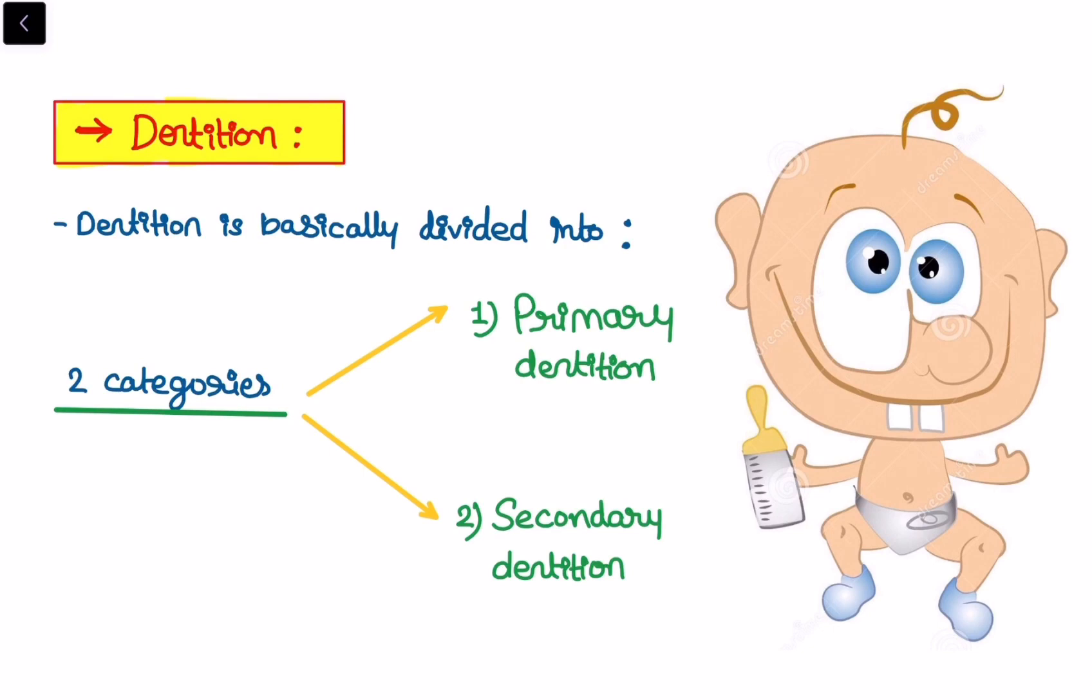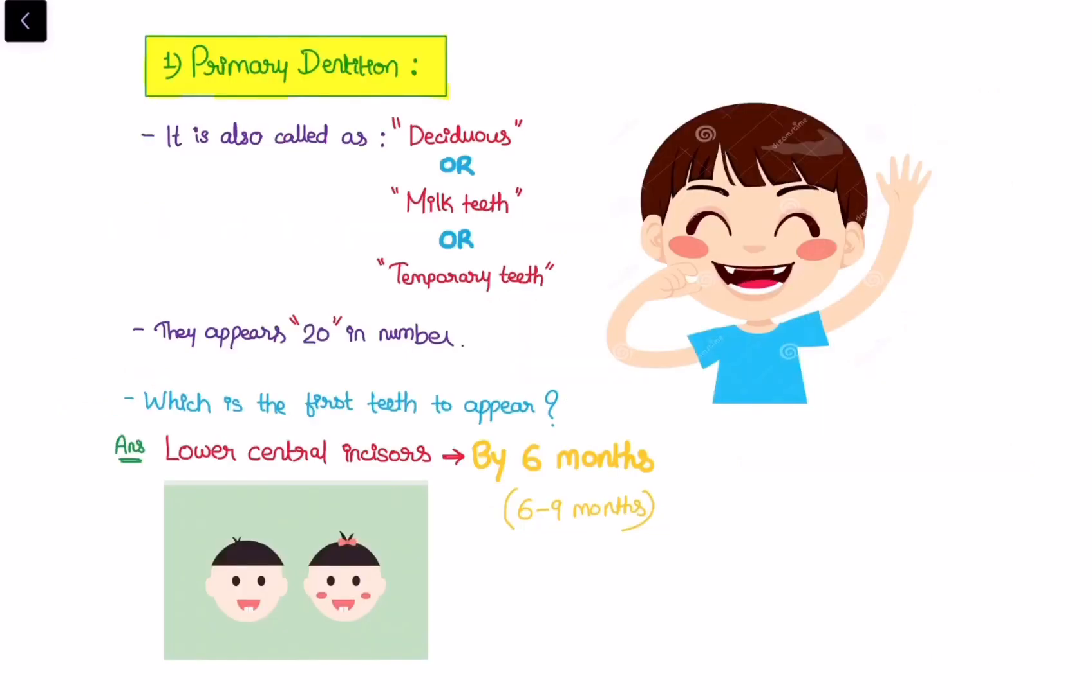Basically, the dentition is divided into two categories. The first one is primary dentition and the second one is secondary dentition. What is primary dentition? These are the first teeth to erupt in the oral cavity and these teeth are also called deciduous teeth, or milk teeth, or temporary teeth. They appear 20 in number. So the question is, which is the first tooth to appear in life? The answer will be lower central incisors, which appear by the age of 6 months but they differ in the range of 6 to 9 months.